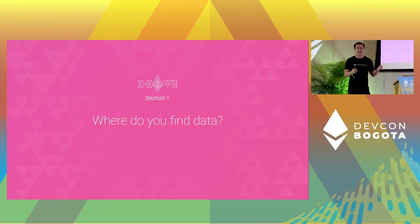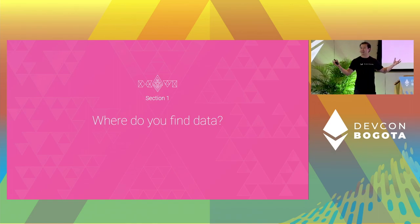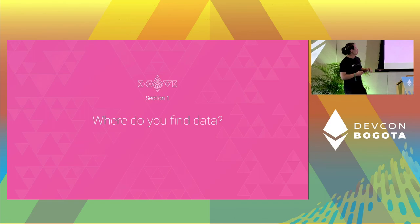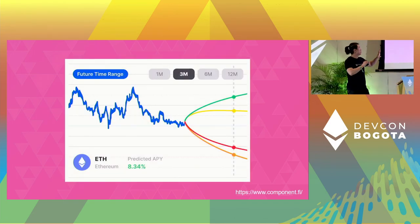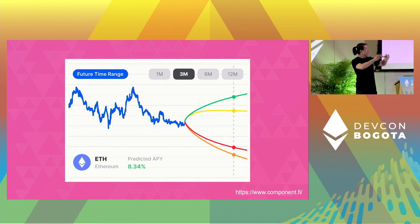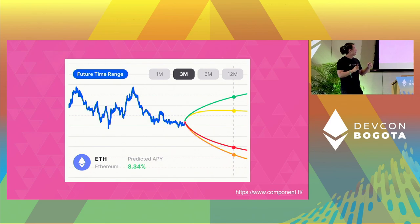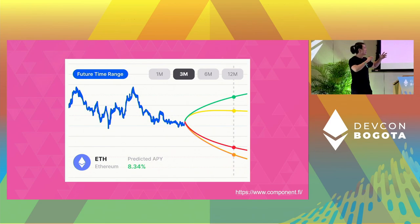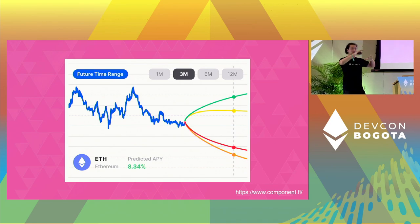If you've ever built a dApp, or have ever considered building a dApp, one of the first questions that comes to mind is probably: where do you find the data? Let me show you an example that Component Finance has been working on. They are trying to build a predictive model for people to look at different assets, like ETH, and how the yield will be in the future.